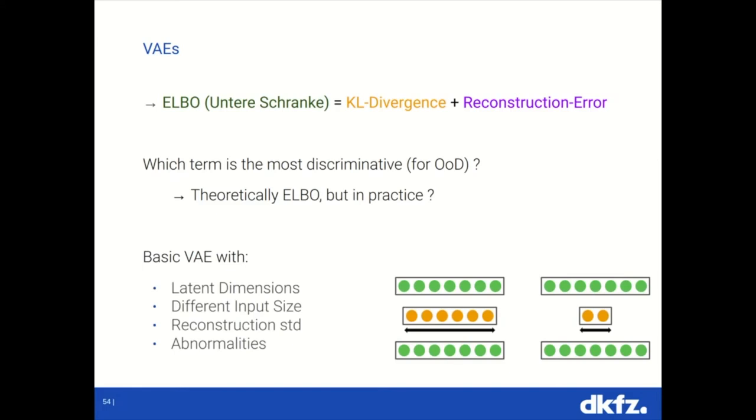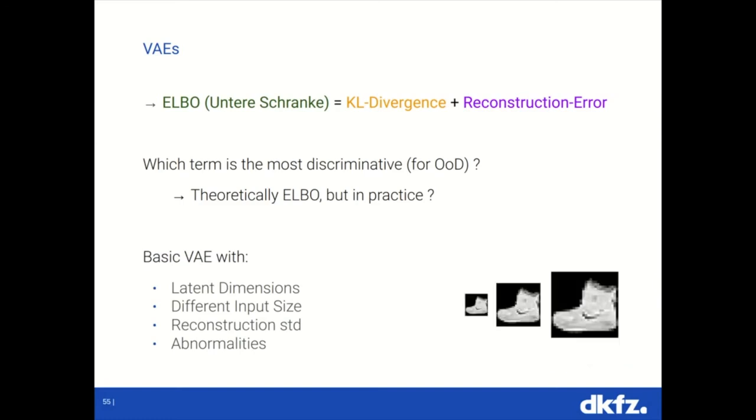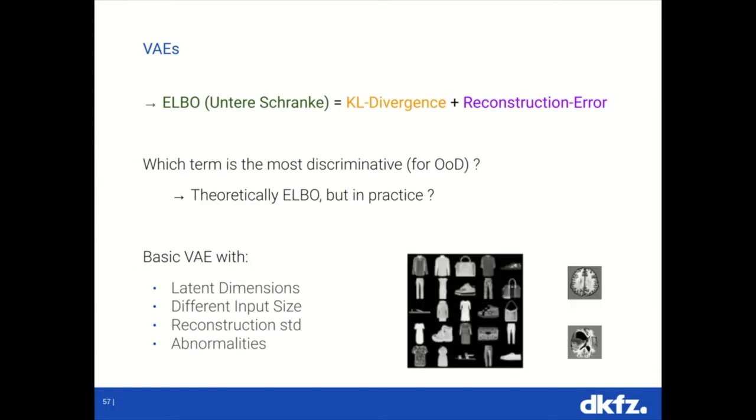Therefore, we evaluated multiple models. Basically, we took a basic VAE from the PyTorch VAE example and increased and decreased the latent dimensions. We used different input image sizes, where we basically upscaled the image. This kind of implicitly raised the KL divergence and the reconstruction error differently. Then we also changed the reconstruction standard deviation C, which also kind of down-weighs or up-weighs the reconstruction error in comparison to the KL divergence. And we also looked at different anomalies.